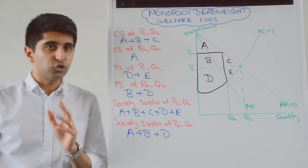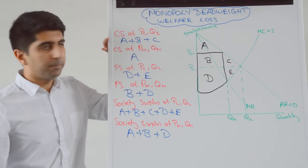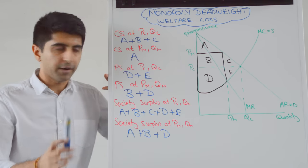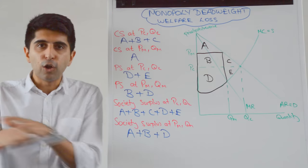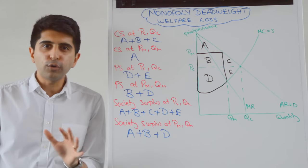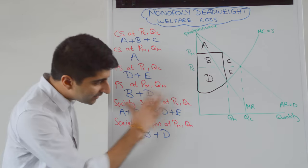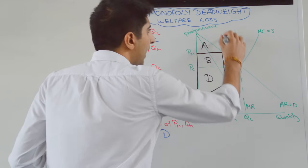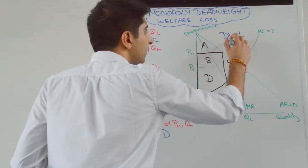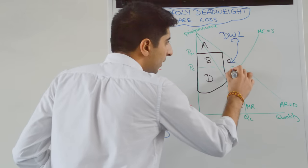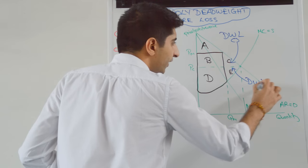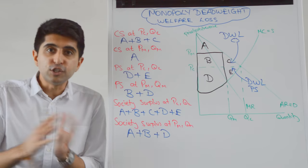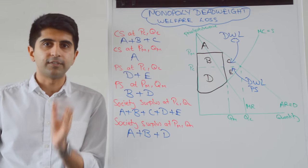Areas C and E though clearly have not been recovered at all. C used to be an area of consumer surplus under competitive outcomes. E used to be an area of producer surplus under competitive outcomes. So areas C and E have been lost, gone forever, non-recovered losses of welfare as clearly seen here when we look at society surplus. So what we can do is we can label C as a deadweight welfare loss of consumer surplus and E represents a deadweight welfare loss of producer surplus.